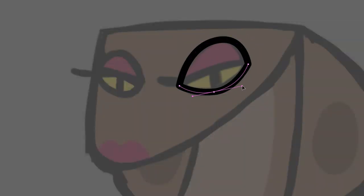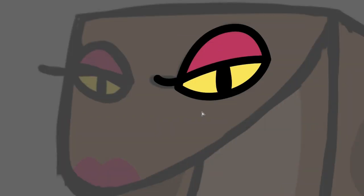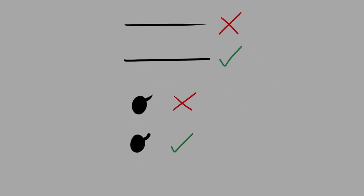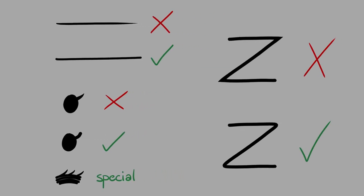Create the puppet pieces. Use a black outline with no pressure sensitivity and rounded ends, including eyelashes. The only time you will use tapered lines is for special facial expressions. Do not miter points — everything is round.